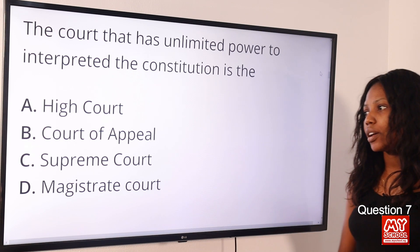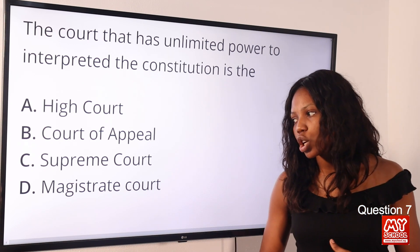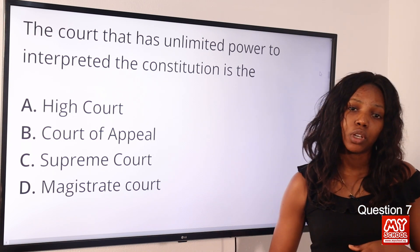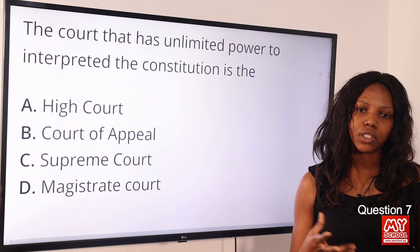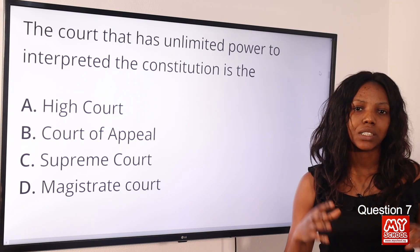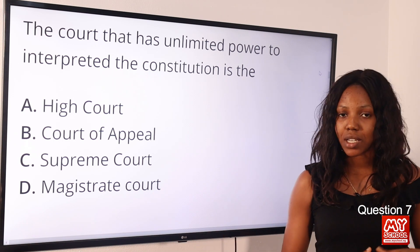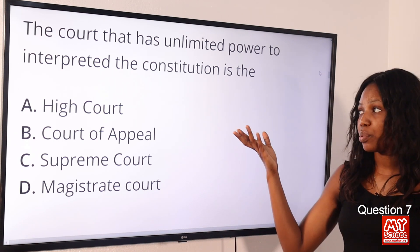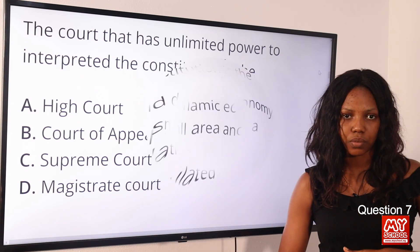Question 7: The court that has unlimited power to interpret the constitution is — option A: High Court; option B: Court of Appeal; option C: Supreme Court; option D: Magistrate Court. The answer is option C, the Supreme Court. Within the hierarchy of courts in any legal jurisdiction, the highest court is the Supreme Court, which has the power to interpret the constitution.